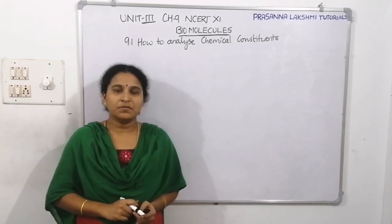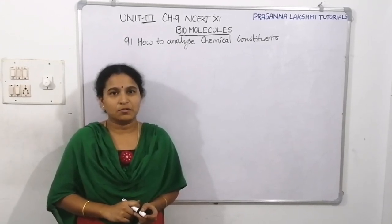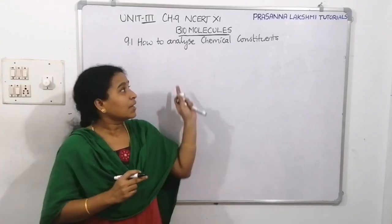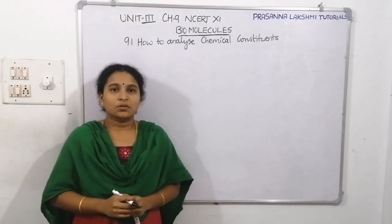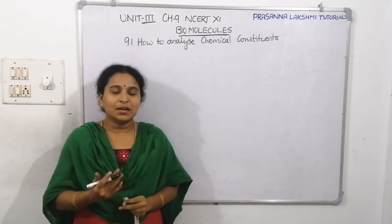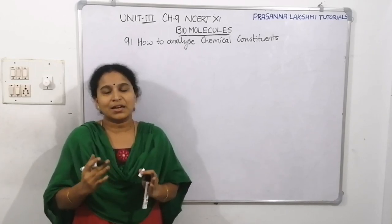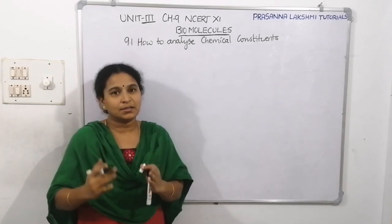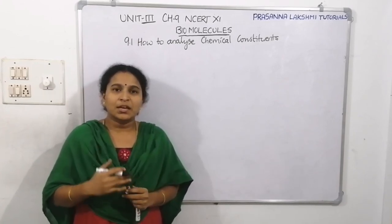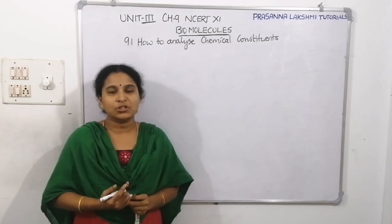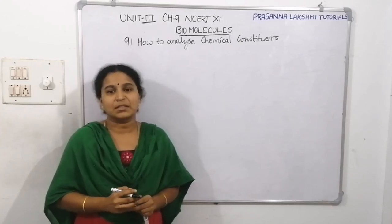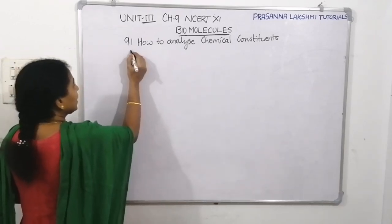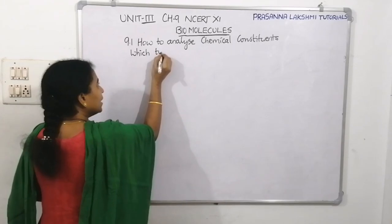Welcome students. In the previous session we discussed introduction to biomolecules. Now in this session we will continue with how to analyze chemical constituents. In the previous session we discussed how to do an elemental composition and find out which elements are found in the living tissue and which elements are found in the non-living tissue like an earth crust. Now continuing with similar questions: which type of organic elements are found in the living tissue?